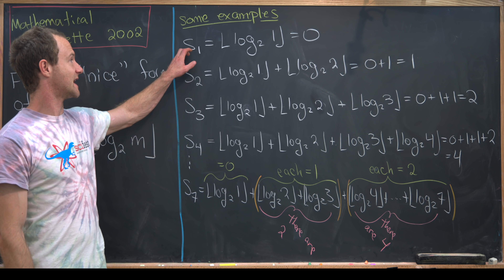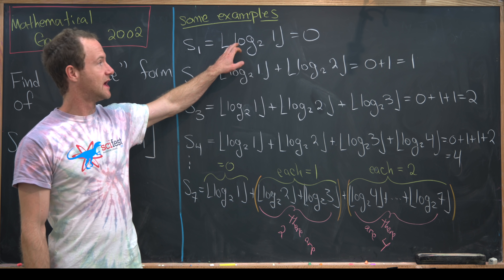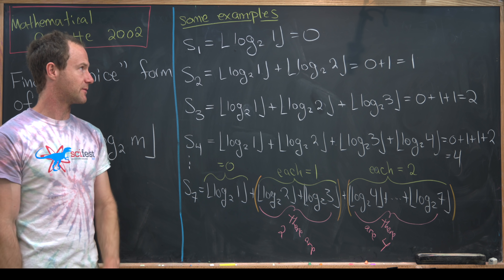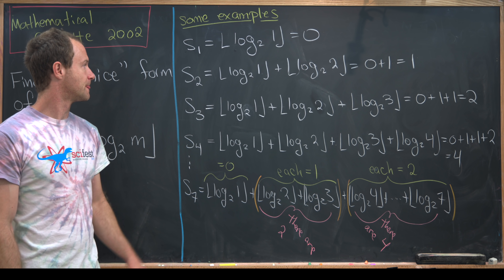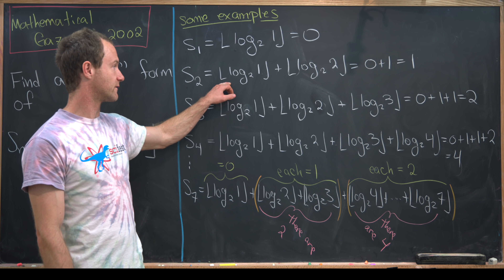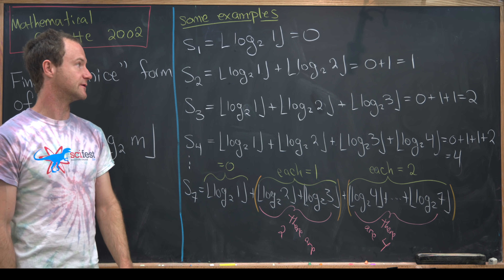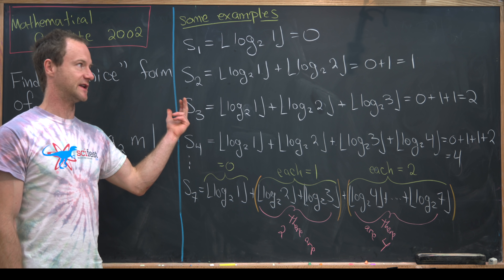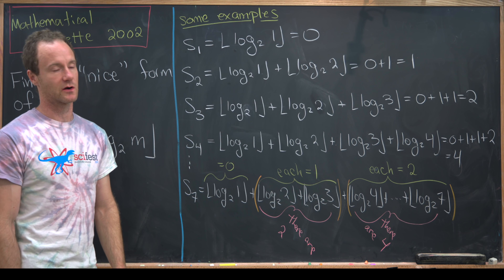S₁ is just a single term, and that single term is equal to 0 because the log base anything of 1 is equal to 0. If we look at S₂, we get the floor of log base 2 of 1 plus the floor of log base 2 of 2. Both of those are easy to calculate — it's just 0 and 1 by the definition of the logarithm.